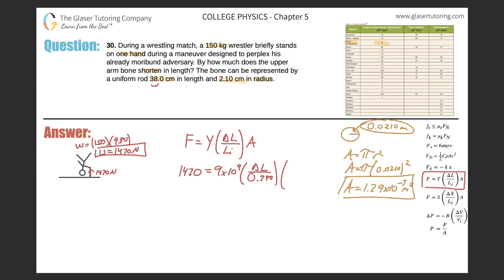So now we can plug that area into our formula. So now it's 1.39 times 10 to the minus 3. Great. Let's clean it up. So we got 1470 is equal to, so we got 9 times 10 to the 9 times 1.39 times 10 to the minus 3, and then divide that by 0.38.